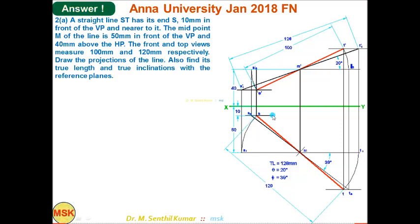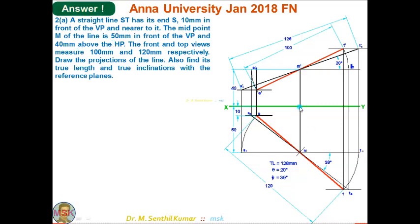After drawing the XY line, draw a locus 10 mm in front of VP for end S. Mark midpoint M': M-dash is 40 above XY (above HP) and M is 50 in front of VP (50 below XY). Mark M-dash and M, along with the locus for the top view side.